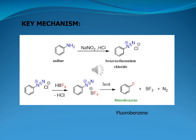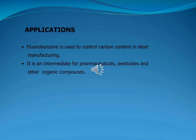The key mechanism of fluorobenzene synthesis consists of the following steps: initially, aniline is treated with sodium nitrite as an oxidizing agent in the presence of hydrochloric acid, giving the first intermediate benzene diazonium chloride. This intermediate is further treated with tetrafluoroboric acid to give benzene diazonium tetrafluoroborate cation. Upon simple heating, the benzene diazonium cation gives fluorobenzene by the evolution of nitrogen gas. Fluorobenzene is used to control carbon content in steel manufacturing and is an intermediate for pharmaceuticals, pesticides, and other organic compounds.